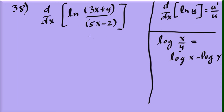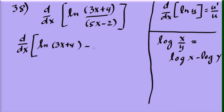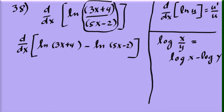Using that property, before applying the derivative rule, we rename: natural log of (3x plus 4) over (5x minus 2) becomes natural log of (3x plus 4) minus natural log of (5x minus 2). This avoids needing the quotient rule entirely, making differentiation easier.